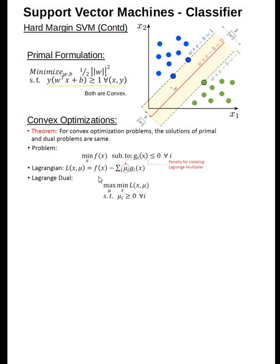From a Lagrangian perspective, a Lagrangian of this objective function with the constraint can be written as f(x) minus sum of μ_i g_i(x), where the μ_i's are the penalties for violating the Lagrangian multiplier. The Lagrangian dual optimization does a max min Lagrange of x, μ—it maximizes the penalty term if conditions are violated and minimizes the f(x).